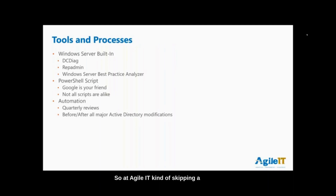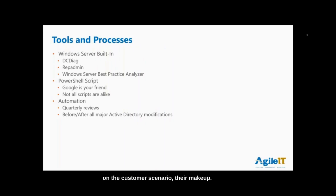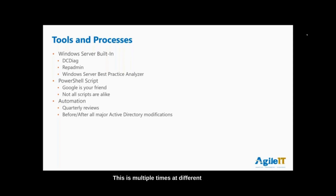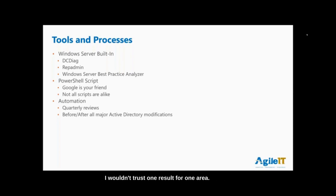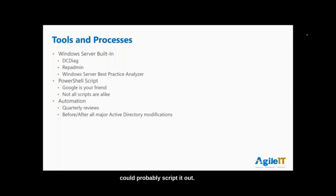At Agile IT, when we do these health checks, we use different tools depending on the customer scenario. Their makeup, different sites and locations — sometimes you run different processes for multiple forests or child domains. Don't think that running it in one place covers everything. You should really look at doing this at least quarterly in your environment, and for simpler environments you can script and automate it to capture major changes.